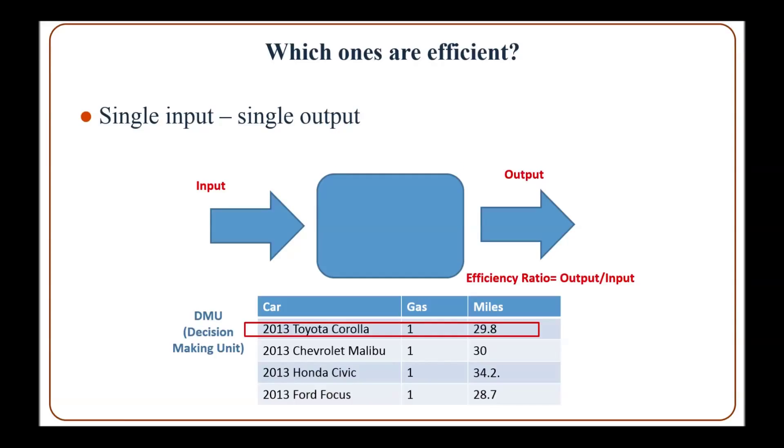Consider a single input single output model. Simply, the efficiency ratio can be calculated as output divided by the input. Consider cars for example: gas can be the input and miles can be the output.